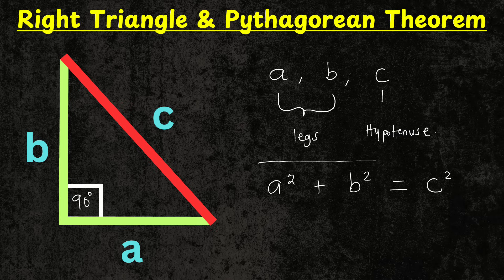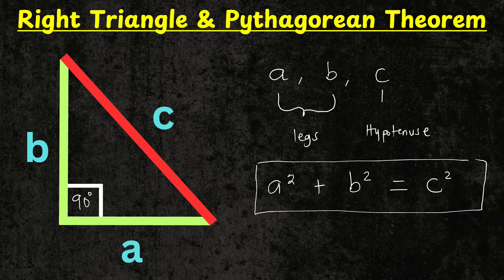And this only applies to right triangles. We can use the Pythagorean theorem, as we are going to see shortly in the three problems, to find the length of these three sides. Get your notebooks and let's get started.